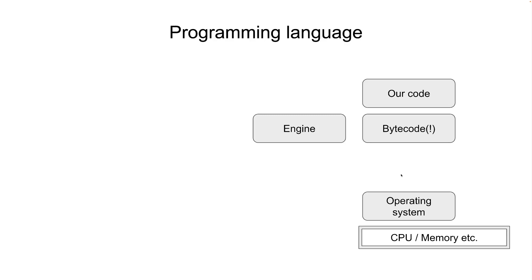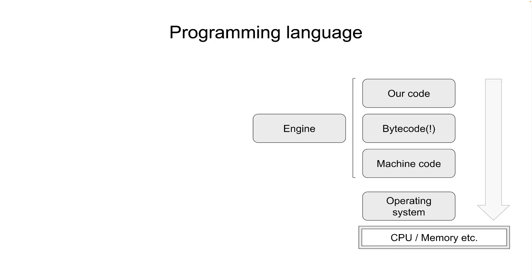Conceptually, the bytecode is an intermediate representation. When the bytecode is running, the system executes it. For the bytecode to run, you first need the bytecode engine installed on your computer. Otherwise, you need to install the relevant runtime — for example, you need to install Node.js.